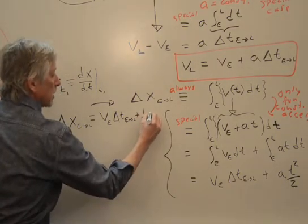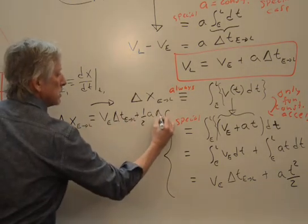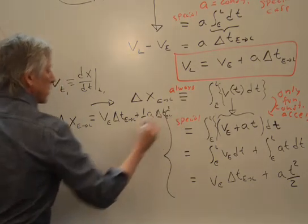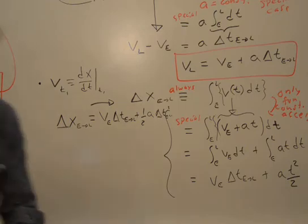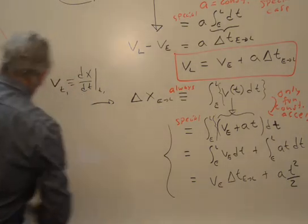1 half the acceleration, which is constant, times that t, which is really a delta t. Delta t earlier to later. This is getting pretty messy squared. So let me rewrite that. You could rewrite it too. And then we've got it. And I'm going to tell you one more quick thing. I think we can squeeze it in.